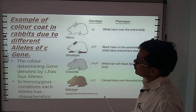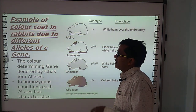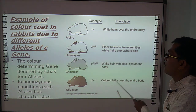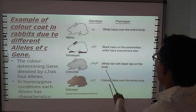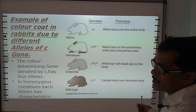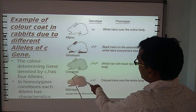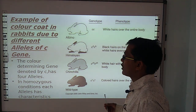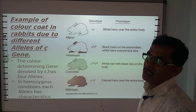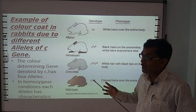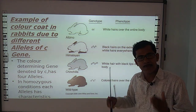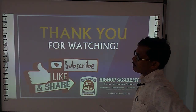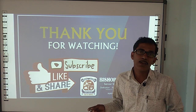Another example of co-dominance is coat color in rabbits, due to different alleles of the C gene. These can produce albino (white hair over the entire body), Himalayan (black hairs on the extremities), wild type, and chinchilla type (white hairs with black tips). The color-determining gene C has four alleles, and in homozygous conditions each allele has specific characteristic features. Students, if you have any doubts, you can contact me on Google Classroom.